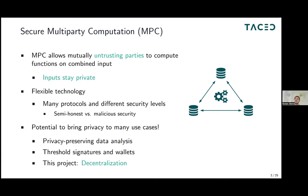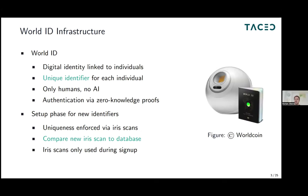MPC is in some sense quite similar to FHE — fully homomorphic encryption — and zero knowledge, in that it can be applied to tons of different use cases to enhance privacy. In academia you often see MPC applied to machine learning or data analysis. In Web3 infrastructure, MPC has been applied to threshold signatures and threshold wallets. In this project, we use MPC to decentralize a database to bring more privacy, specifically applying MPC to the WorldID infrastructure.